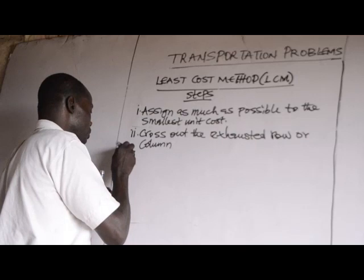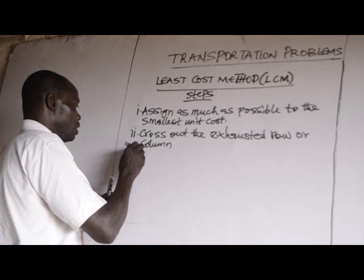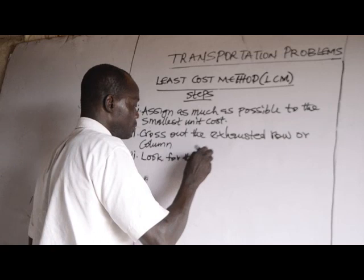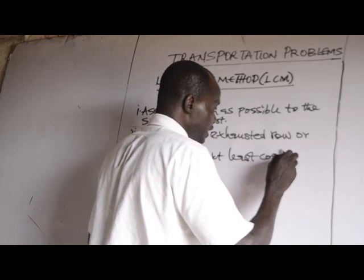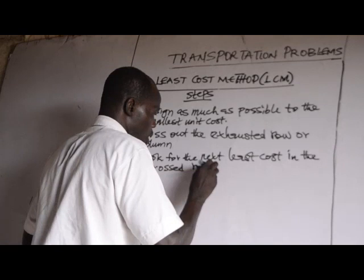Step 3: look for the next least cost in the uncrossed row or column and assign. Step 4: repeat and assign. These are the steps for solving transportation problems using the least cost method.